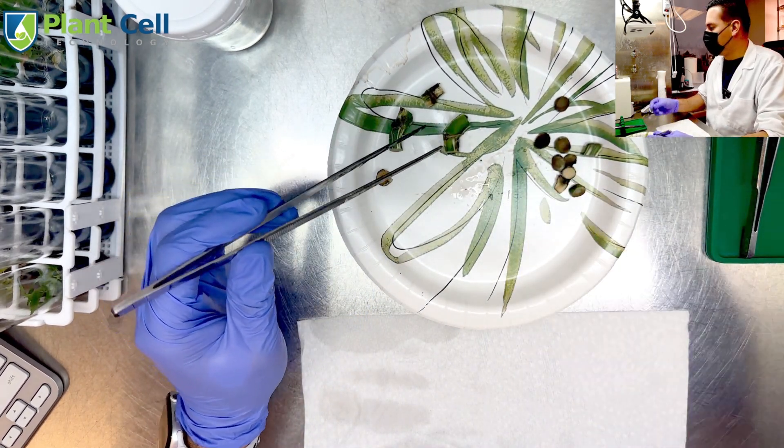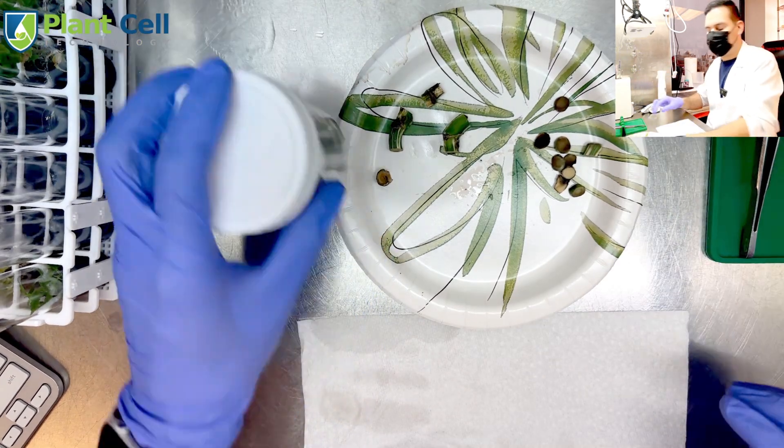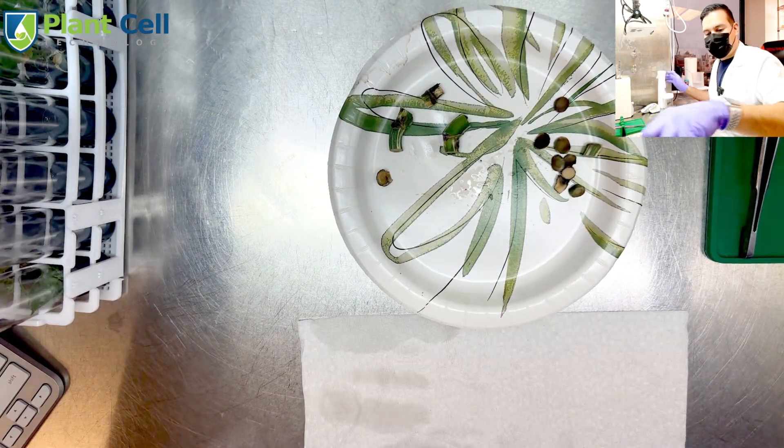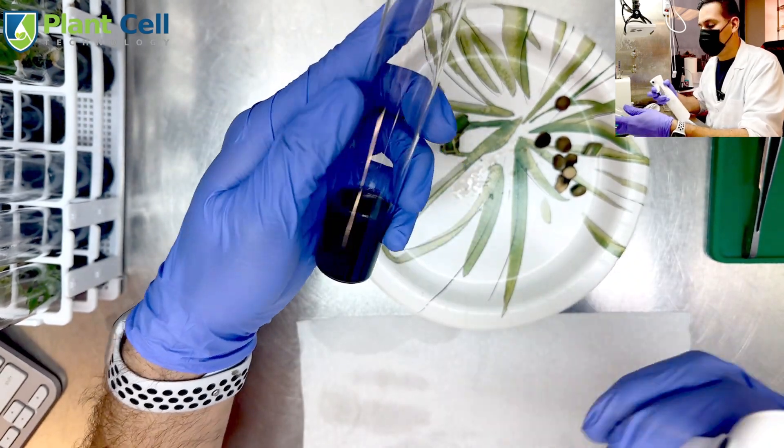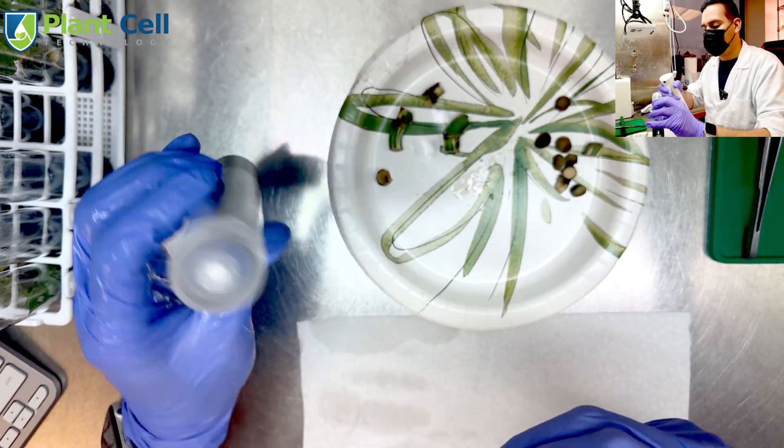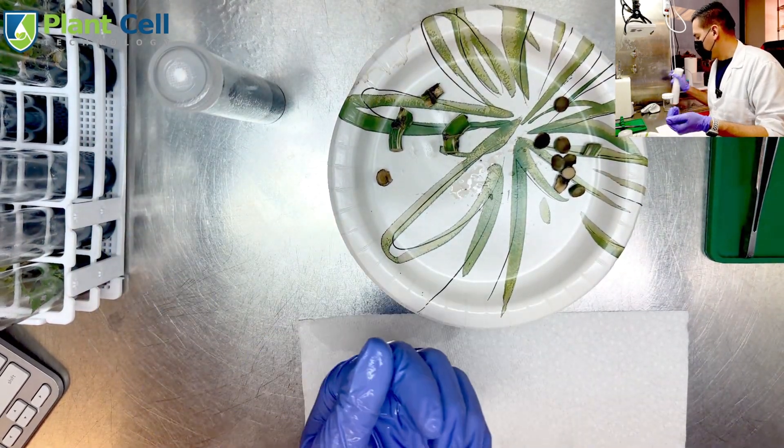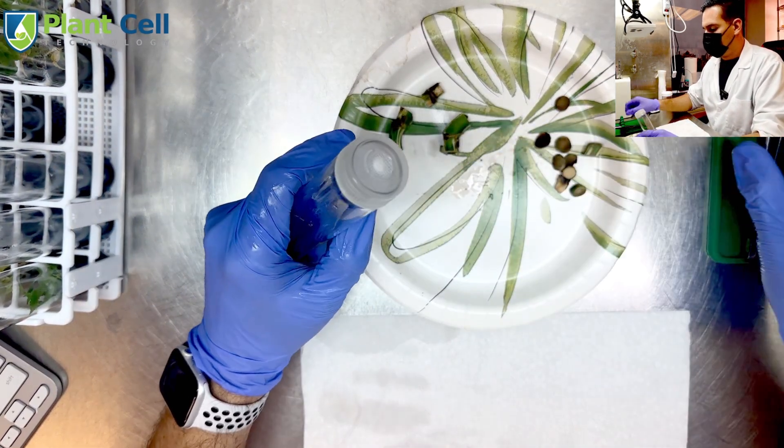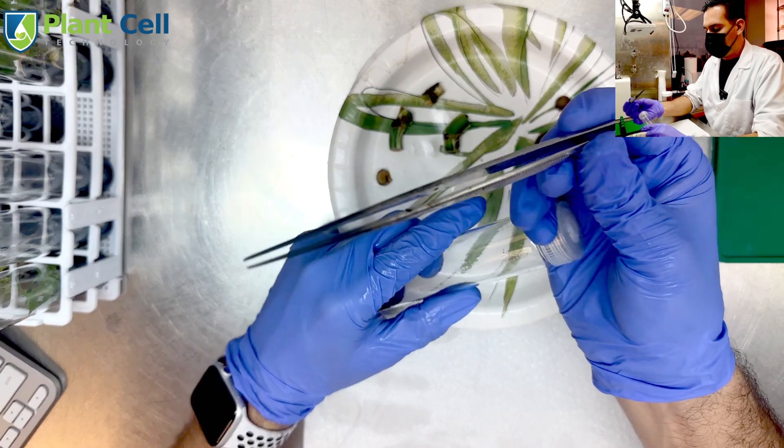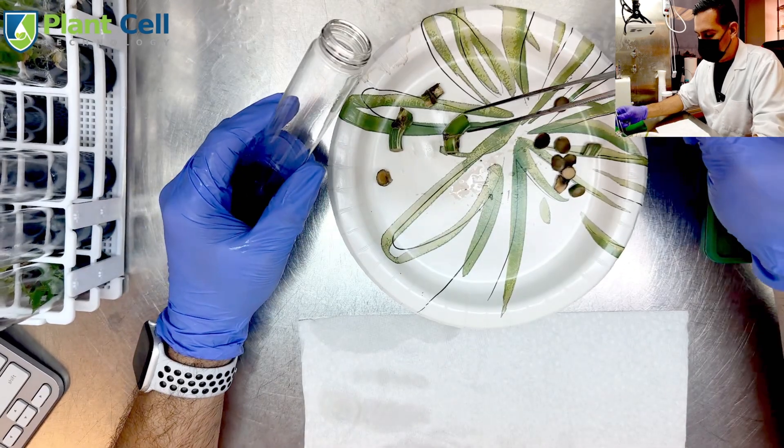There we go, I have my four cuttings sterilized. I want to take my test tube. This media is just MS media but it has charcoal on it, so it can absorb some of those phenols. I'm going to take my plants.